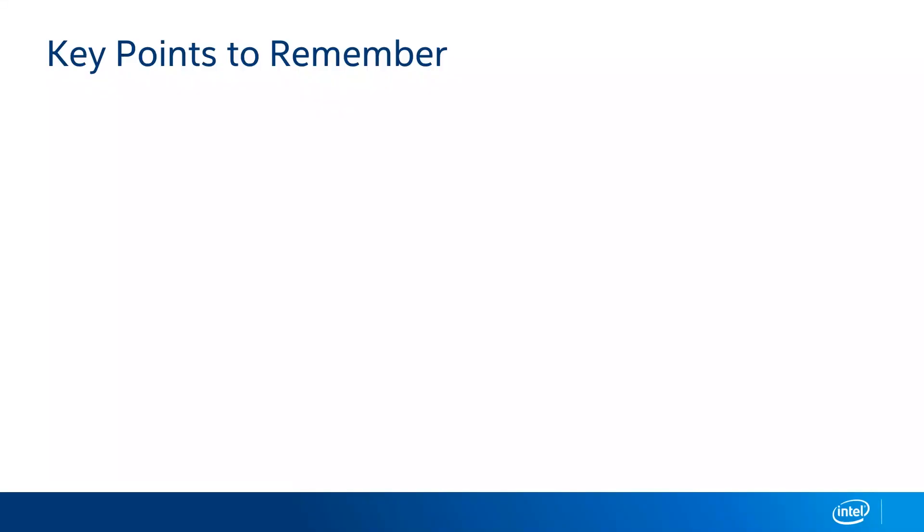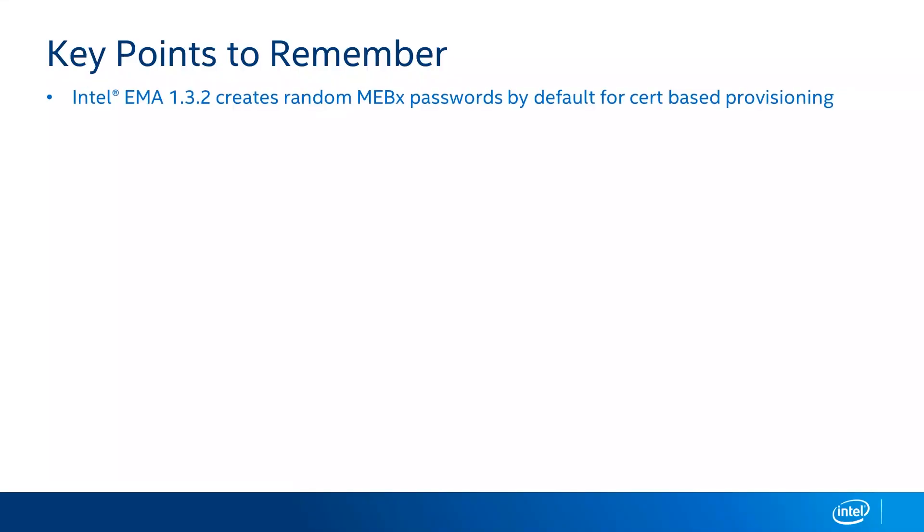Let's wrap up a few key concepts. First, with Intel EMA version 1.3.2, there is the option of creating a random MEBX password when doing certificate-based provisioning. If you choose that option, those random passwords will be added into the Intel EMA database and you can use an API to look them up. Just remember they are randomized by default.